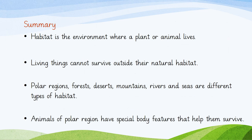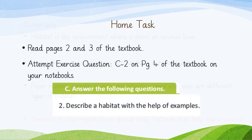We shall now summarize what we have studied in this lesson. Habitat is the environment where a plant or animal lives. Living things cannot survive outside their natural habitat. Polar regions, forests, deserts, mountains, rivers and seas are all different types of habitat. Animals of the polar region have special body features that help them survive in those extremely cold areas. For your home task, read pages 2 and 3 of the textbook and attempt exercise question C2 on page 4 in your notebooks. Good luck!